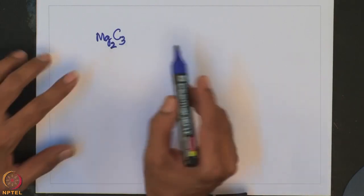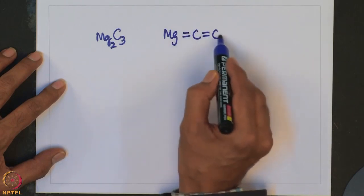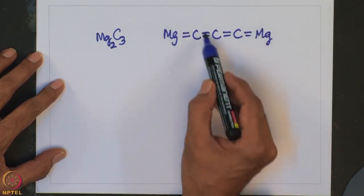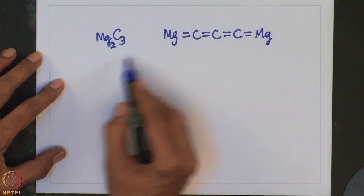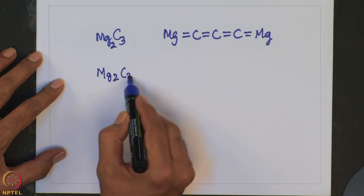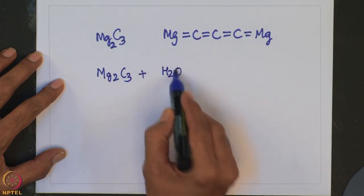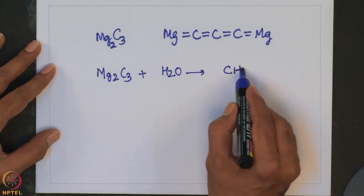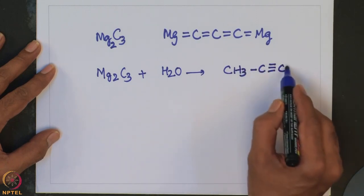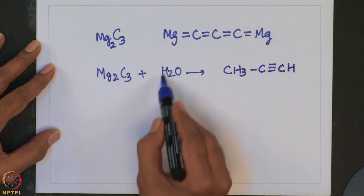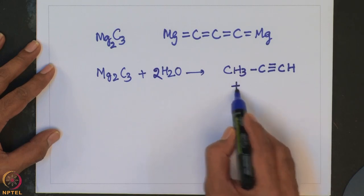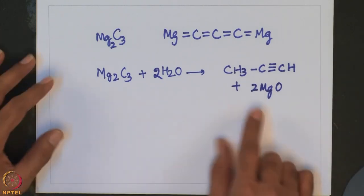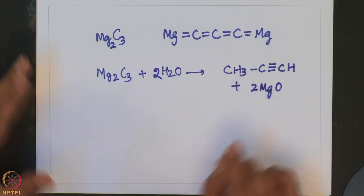Balancing the equation: Mg₂C₃ plus 2H₂O gives CH₃C≡CH (propyne) plus 2MgO. This is balanced: the charges work out with 2× Mg²⁺ (4+) balanced by C₃⁴⁻. The answer is that the carbide is Mg₂C₃ and the product with water is 1-propyne.